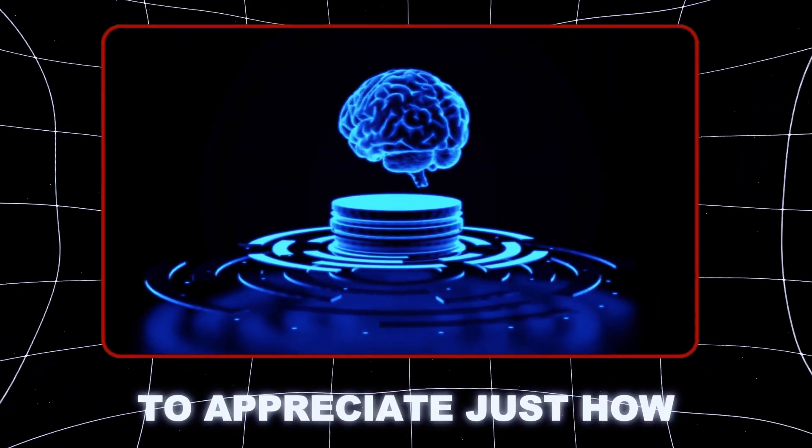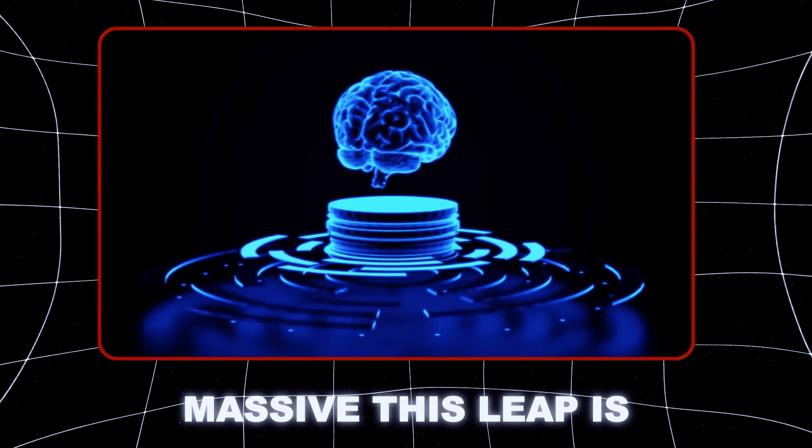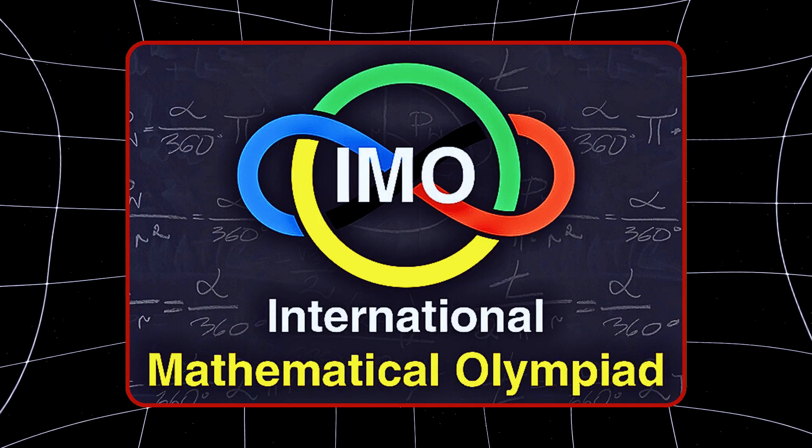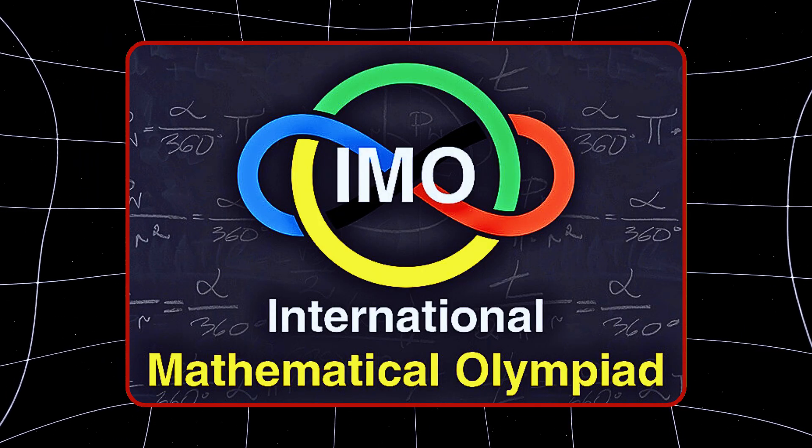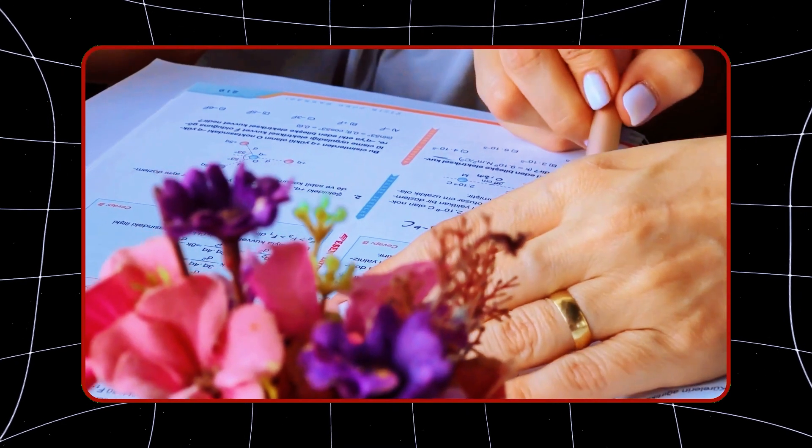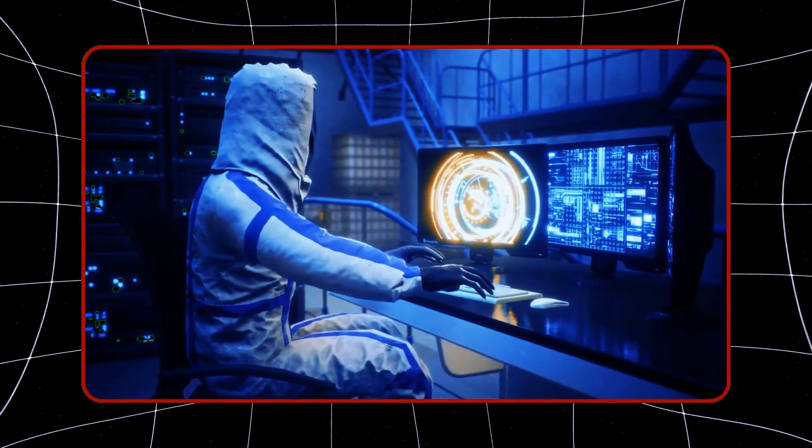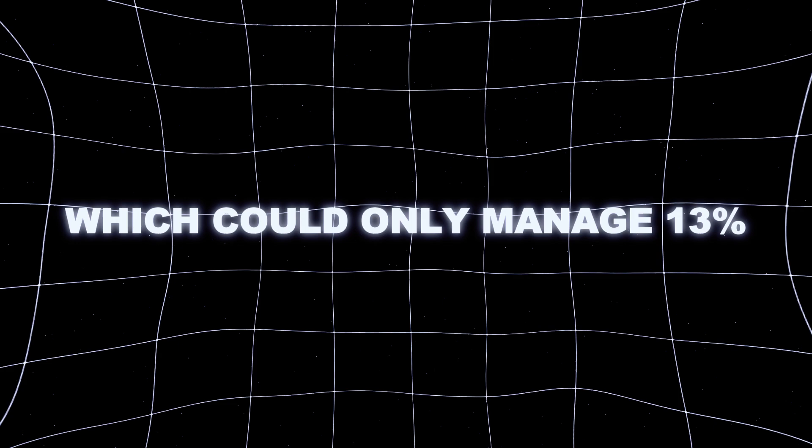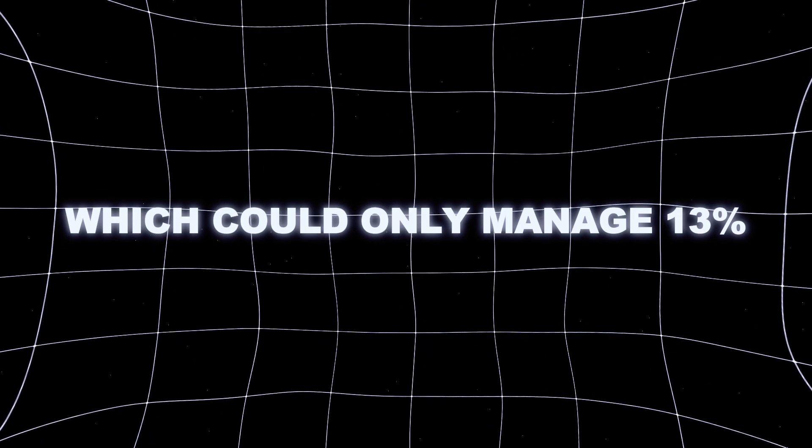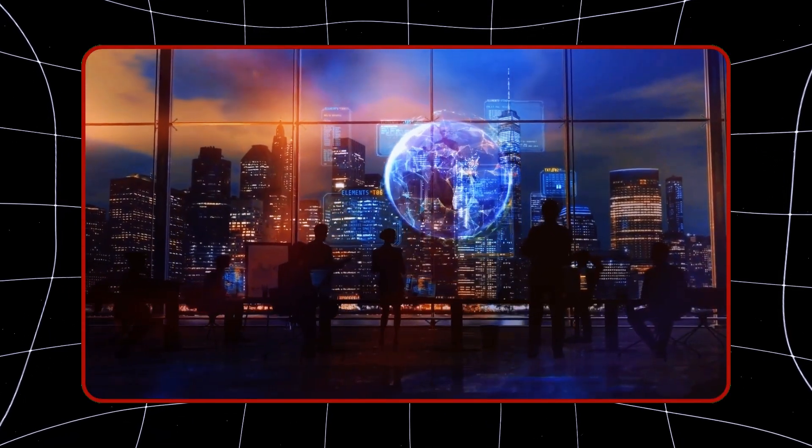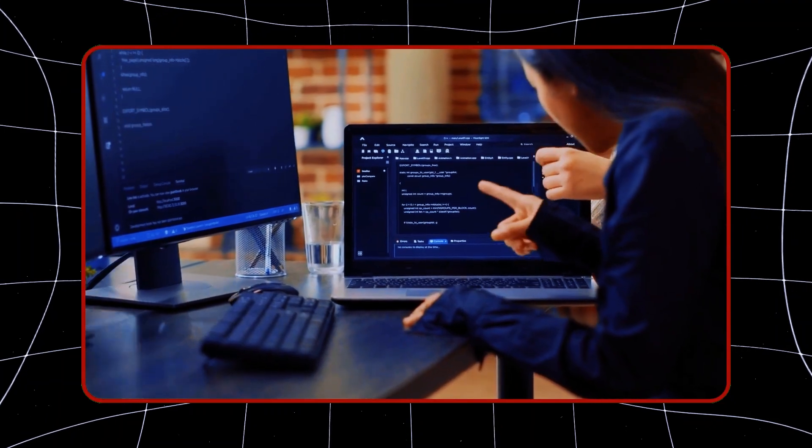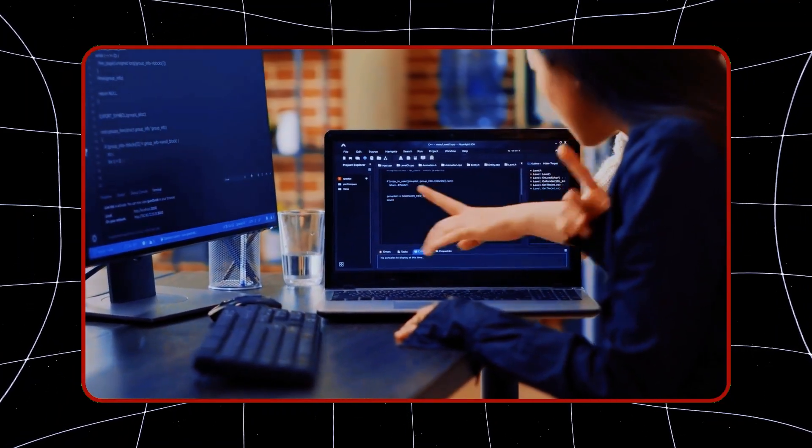Let's take a moment to appreciate just how massive this leap is. In tests like the International Mathematics Olympiad, or IMO, where only the sharpest human minds compete, O1 Preview solved a staggering 83% of the problems, a massive improvement over GPT-4O, which could only manage 13%. This isn't just an incremental upgrade, it's a paradigm shift in how we use AI to solve complex problems.